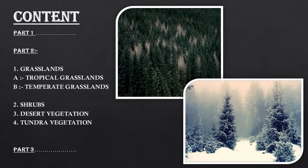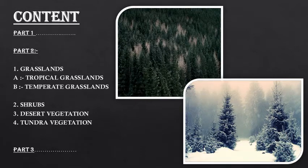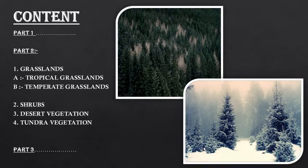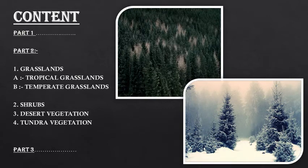Now in this part, in second part, we will know what are grasslands, what are the main types of grasslands, tropical grasslands, temperate grasslands. We will also discuss about shrubs, desert vegetation and tundra vegetation. About wildlife, we will discuss in our next video, part 3.